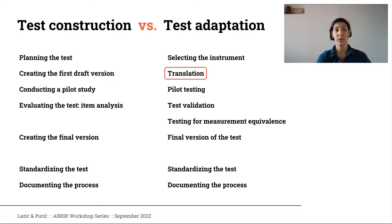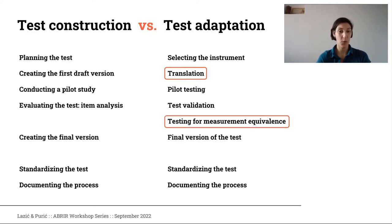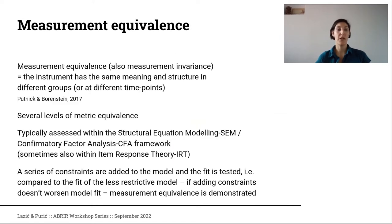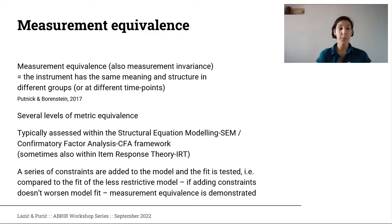What is new when talking about test adaptation? One thing is translation, and another thing is testing for measurement equivalence — we will start first with this, just to explain what it is and why we need to think about it. Measurement equivalence, sometimes also called measurement invariance, means that the instrument has the same meaning and structure in different groups or at different time points. It doesn't necessarily have to do anything with adaptations or translations — we can use it for different ethnic groups, religions, genders, or any subgroups.